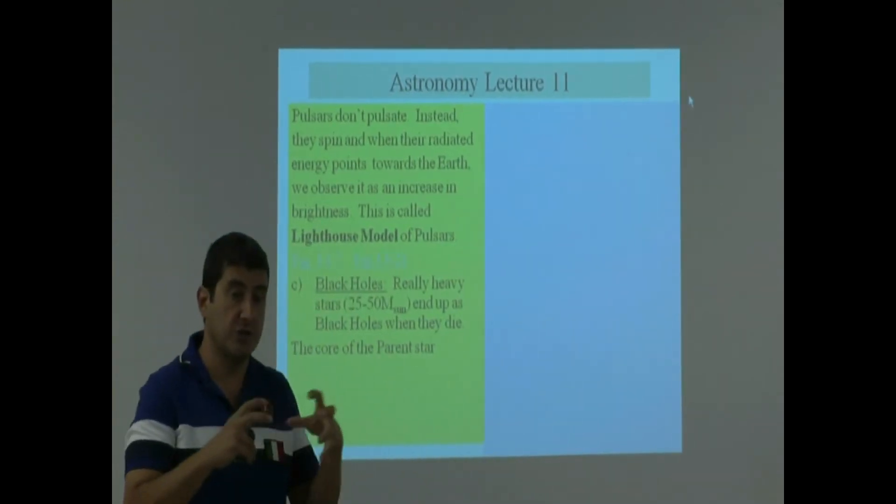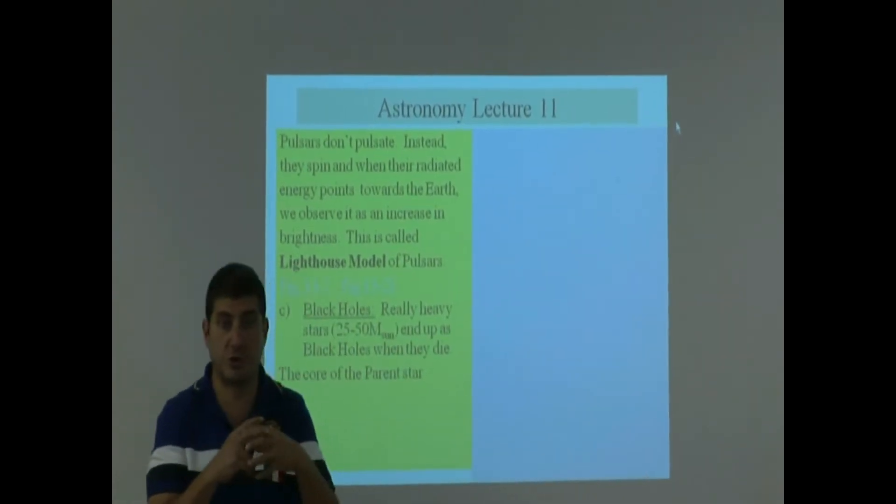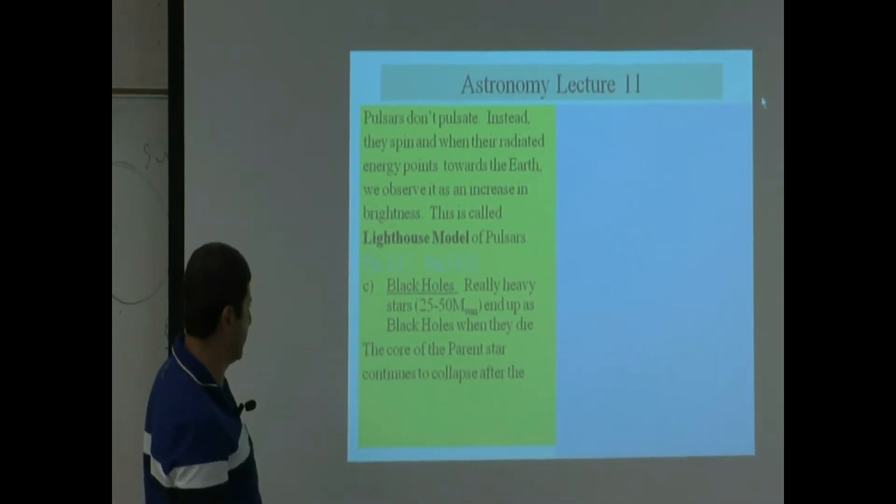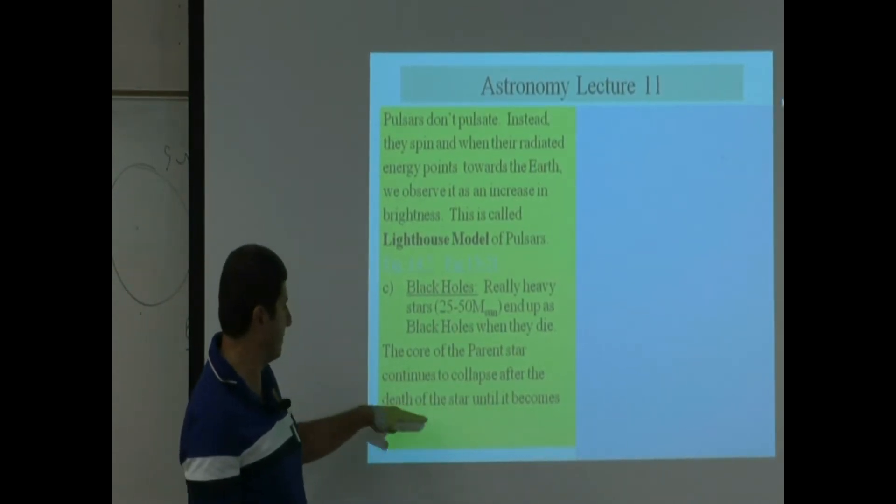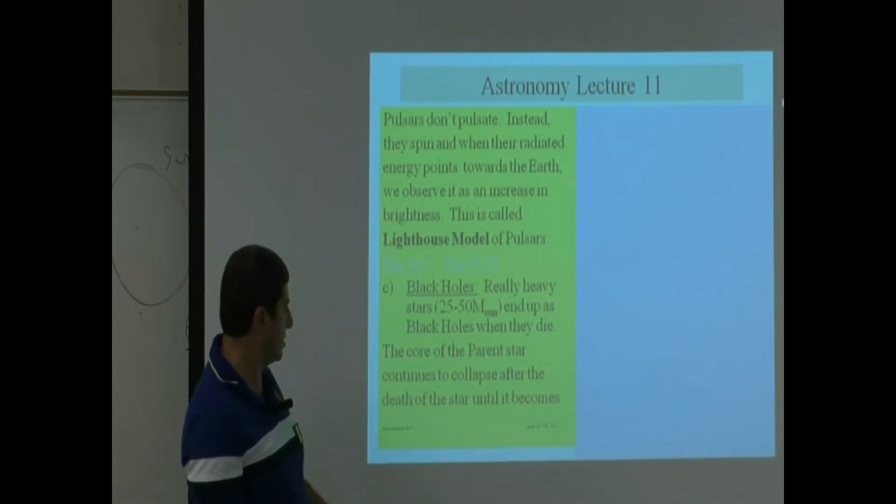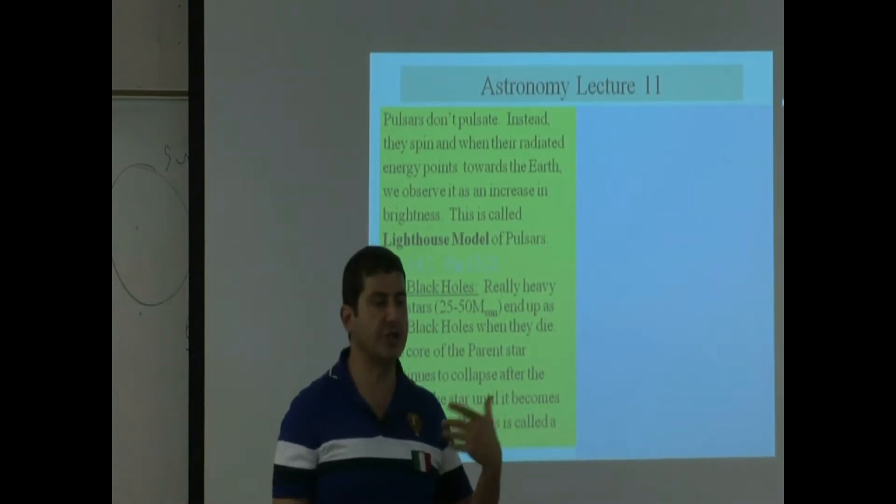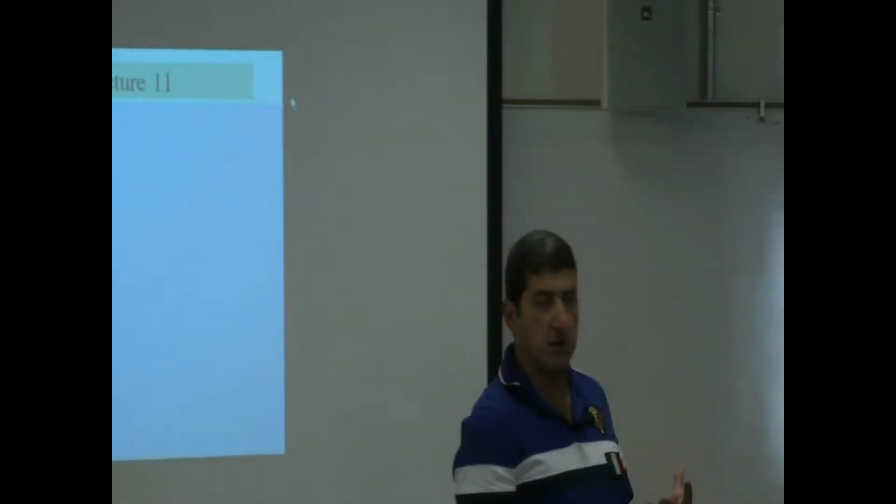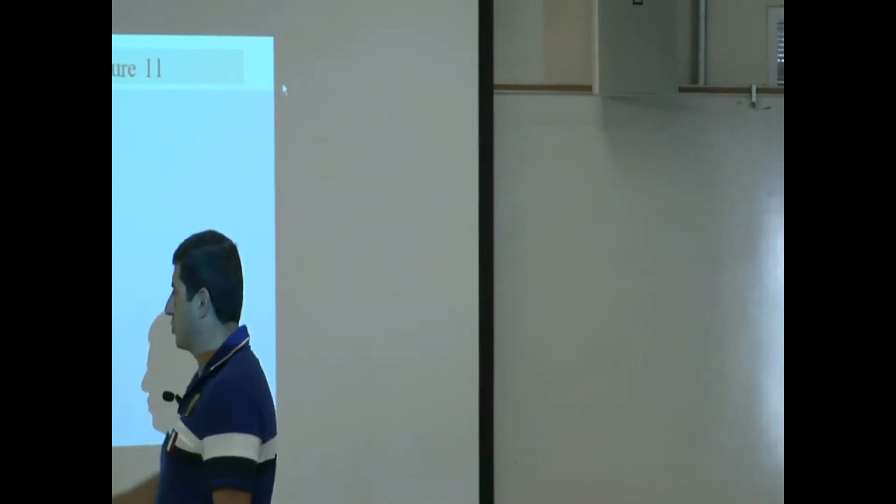For other stars, they weren't that heavy, and then something prevented it from collapsing. And that's the pressure of the core. This one, nothing prevents it from stopping and collapsing. So what happens is the core of the parent star continues to collapse after the death of the star until the core becomes infinitely small. We can't imagine such an object on Earth. How can something have mass and not have any size, have almost infinitely zero size? That kind of an object is called a singularity.